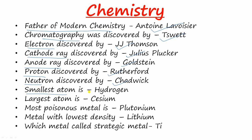The smallest atom is hydrogen and the largest atom is cesium. The most poisonous metal is plutonium. The metal with the lowest density is lithium. Which metal is called strategic metal? The answer is titanium.